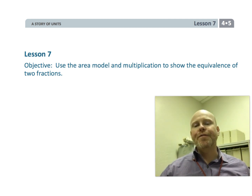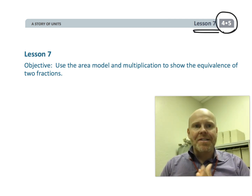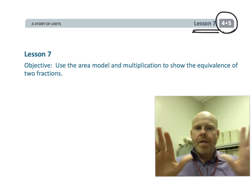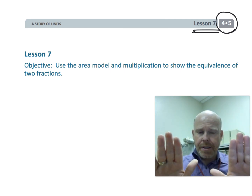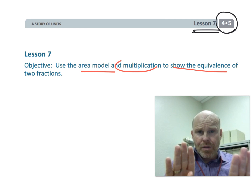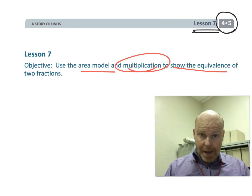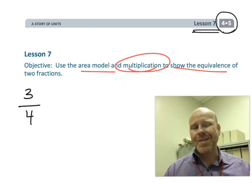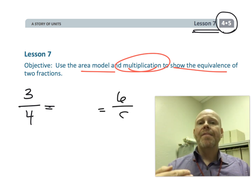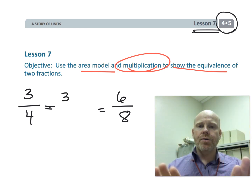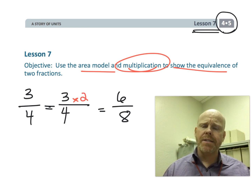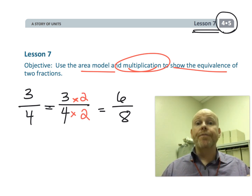This is fourth grade, module four, lesson seven. In this lesson, we're going to be using the area model to show that two fractions are equivalent. Then we're going to show that there's a beautiful pattern with those two fractions — that the numerator and the denominator are both being multiplied by the same thing. Essentially, this lesson is where we really hit home that standard algorithm that shows the relationship between two equivalent fractions. For a lot of parents and teachers, this lesson is really going to start to feel familiar.